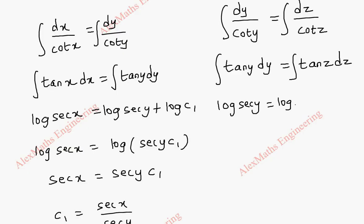This is log of sec z plus log of constant c2. Now using log rule, on the other side, log a plus log b is log a into b. So here it is log of sec z into c2. Now removing log,